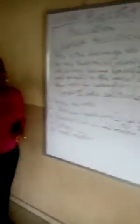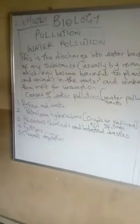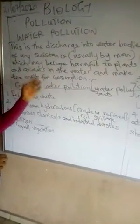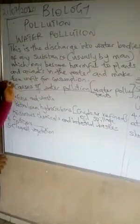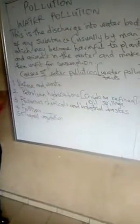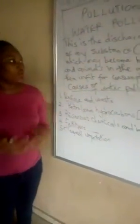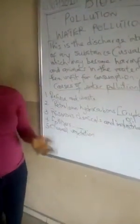Water pollution is the discharge into water bodies of any substance — usually by man — which may be harmful to plants and animals in the water, and may render the water unfit for consumption. Aquatic animals live in the water, so when man releases harmful substances into water bodies, it causes the animals to die or become unfit for human consumption.